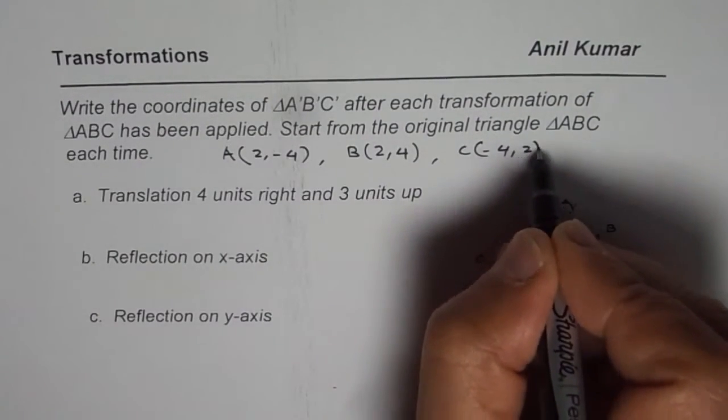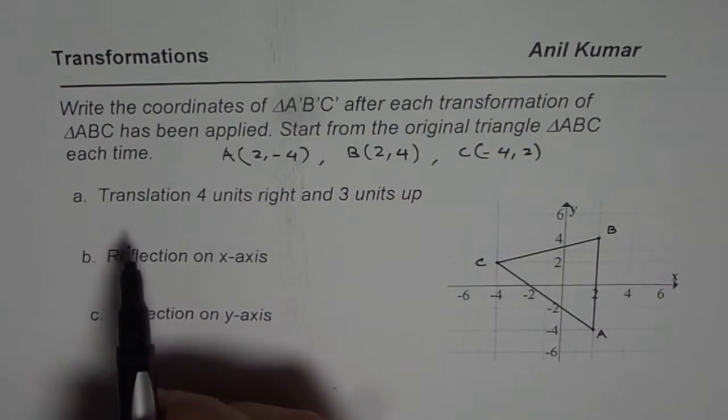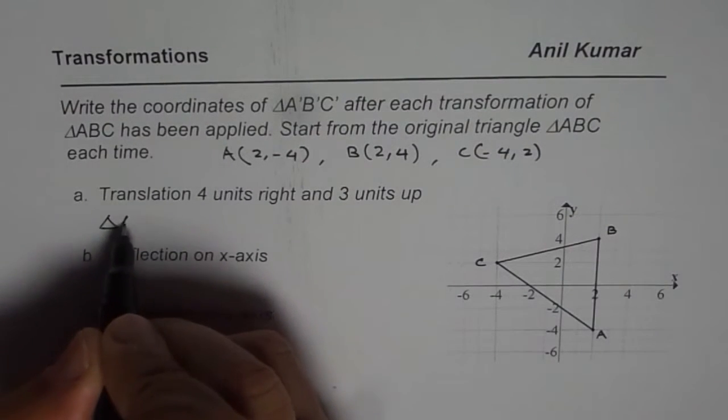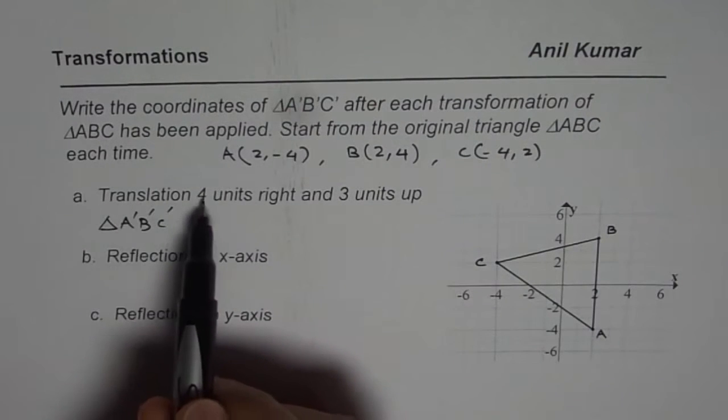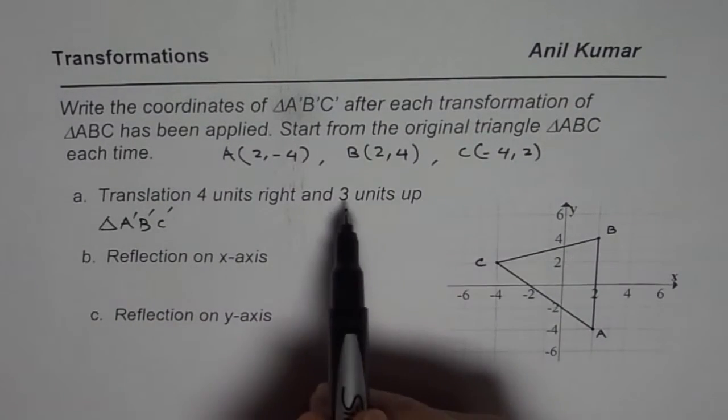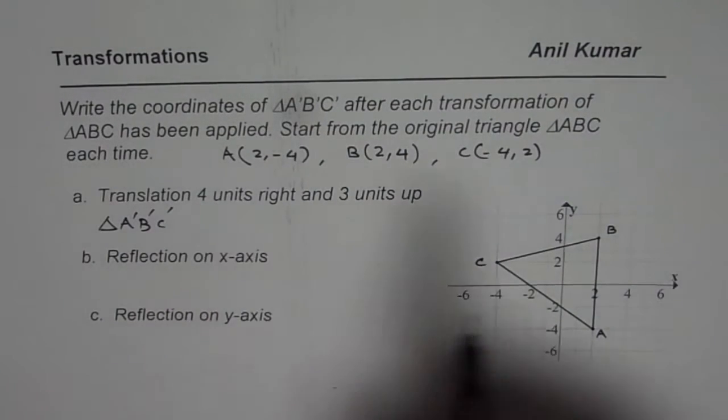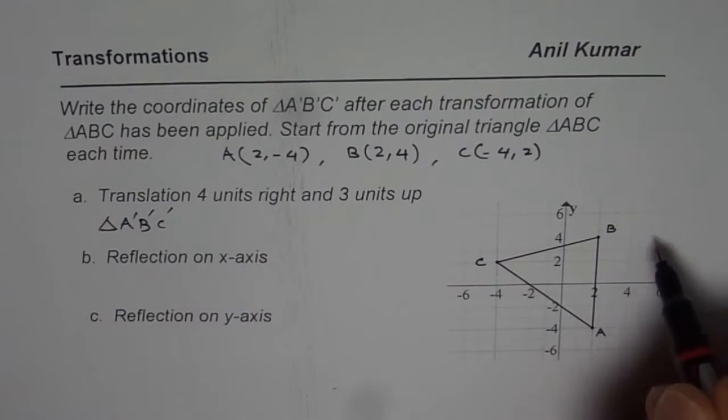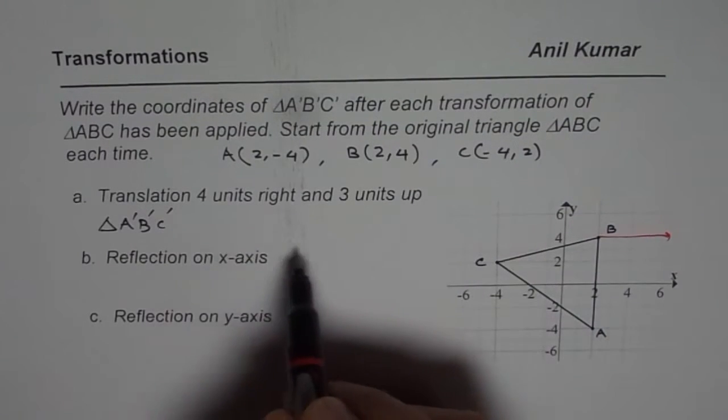Now we need to write these points for triangle A'B'C' after translation of 4 units right and 3 units up. So what is going to happen? If I say 4 units right, let us take this point. If I move from 2, 4 units right, it will move to 6.